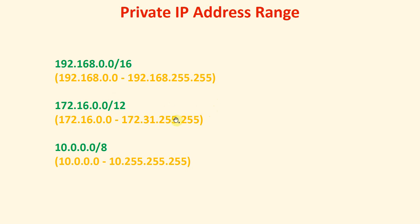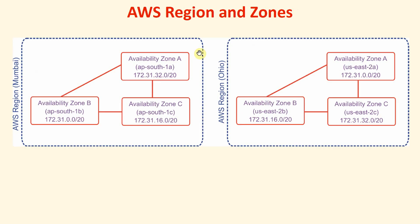The range you prefer, you can assign. Now when we talk about another region — for example, the Ohio region — again, if we create an instance in availability zone A, we will be given the address from that subnet; if it is B, from another subnet; and if C, from another. Please remember, addresses can be different when launching in availability zone A of Mumbai versus availability zone A of another AWS region.